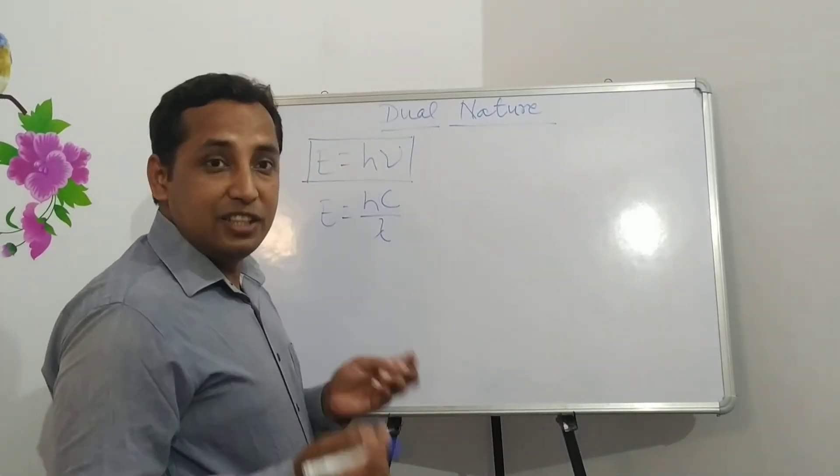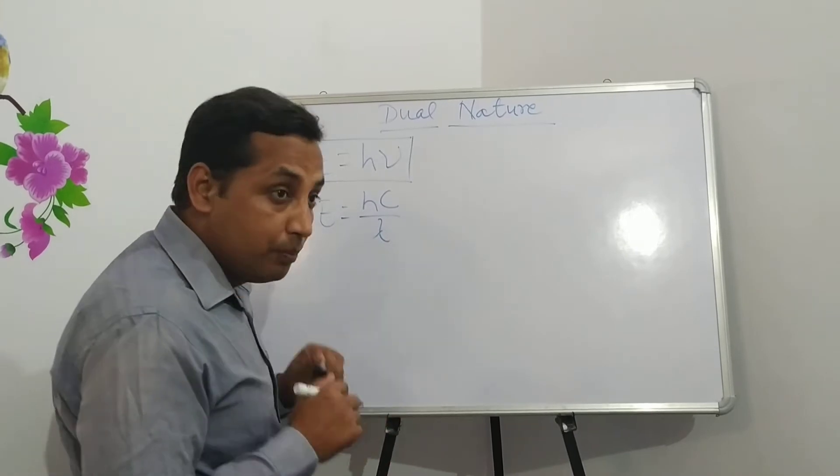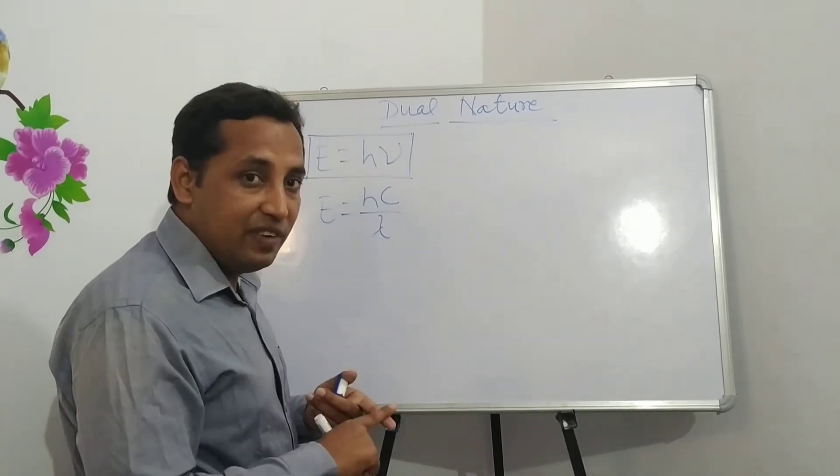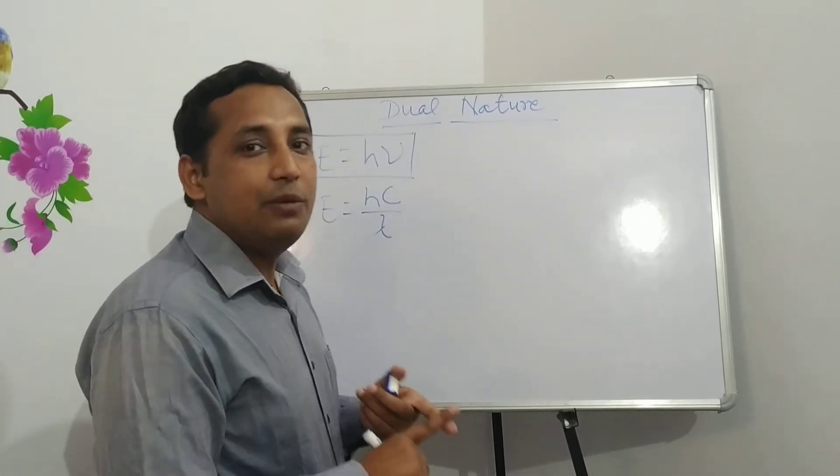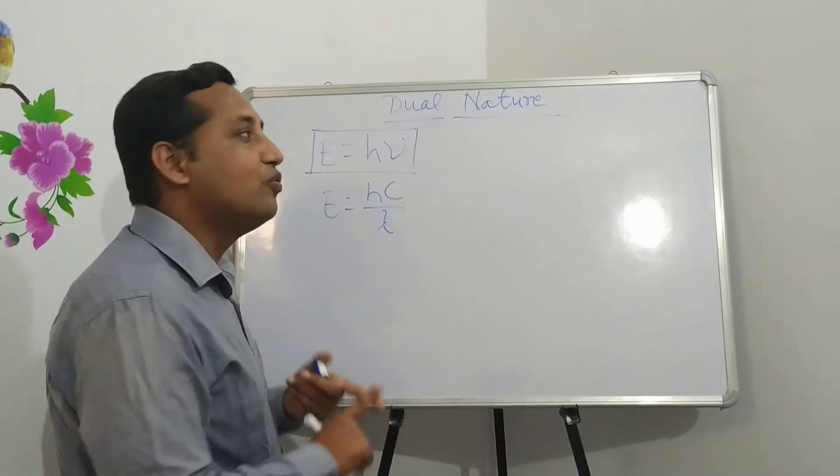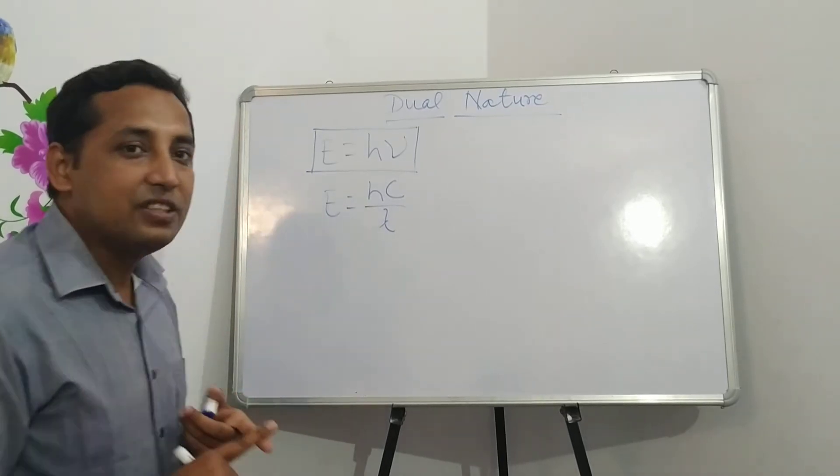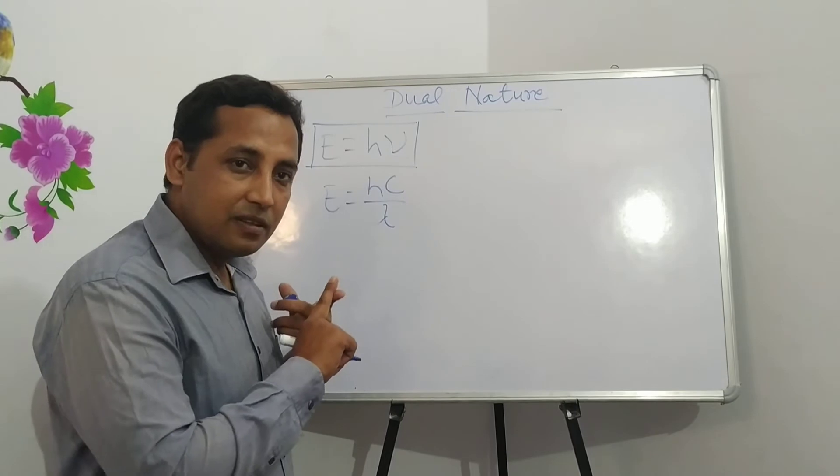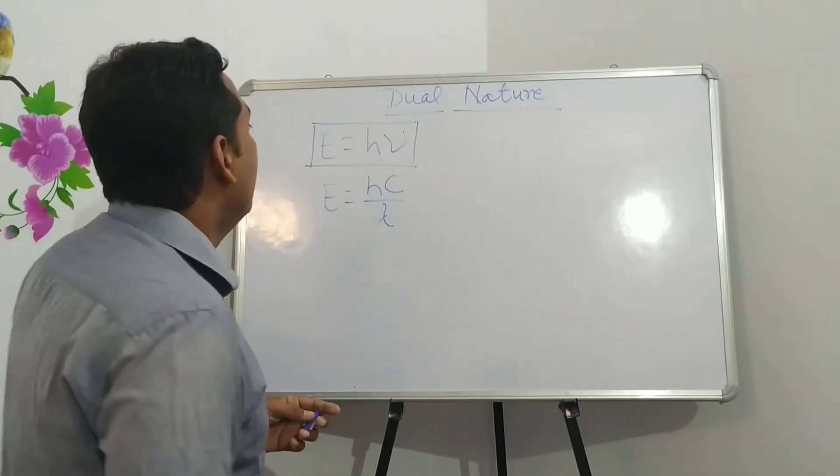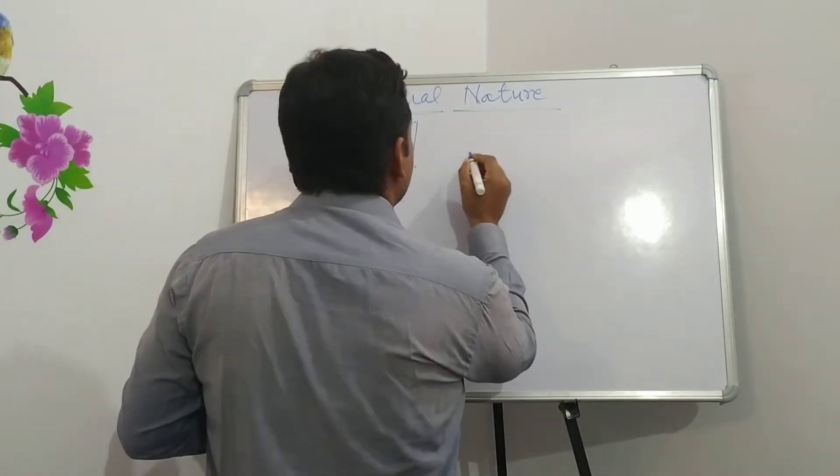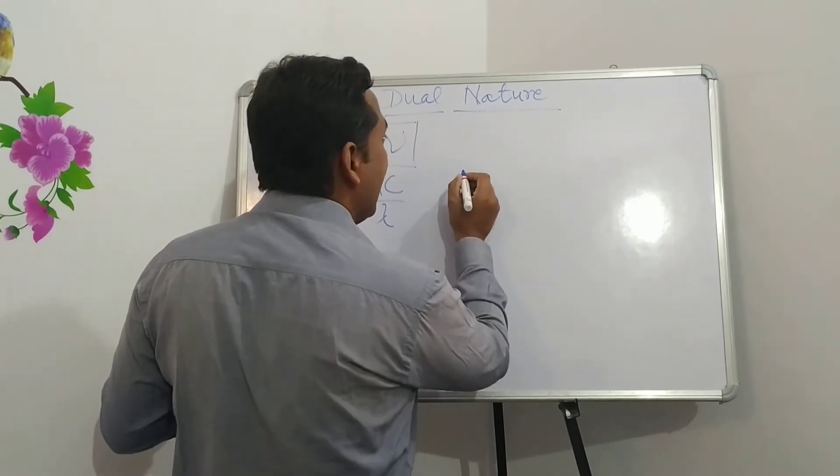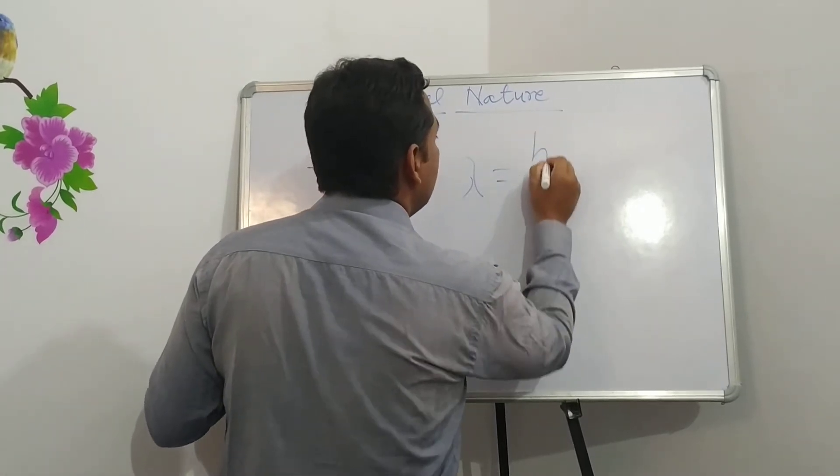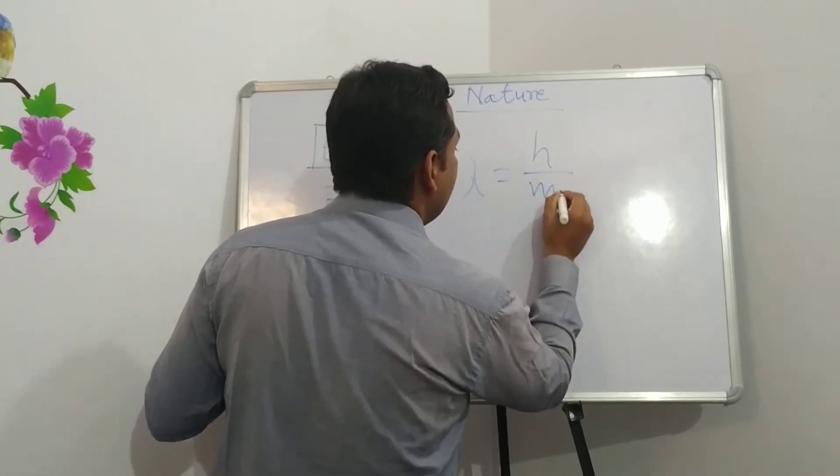Now, another formula associated with relationship between particle nature and the wave nature of electron given by de Broglie, which is known as de Broglie's equation of dual behavior. The formula can be explained by λ is equal to h upon mv.